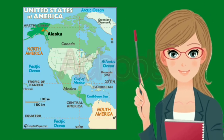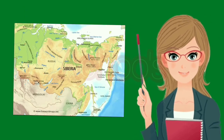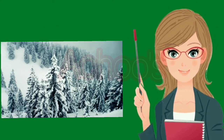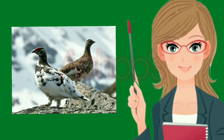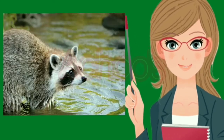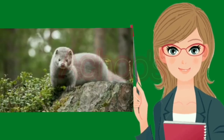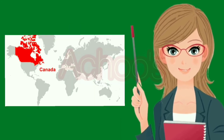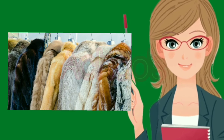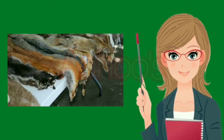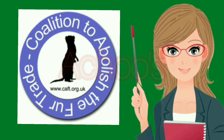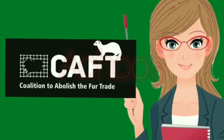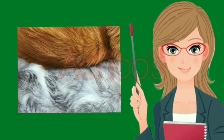Coniferous forests stretch around the earth from western Alaska to eastern Siberia. Wildlife is not abundant in taiga forests due to harsh cold winters and limited food sources — bears hibernate and birds migrate to warmer places during winter months. Animals like squirrels, hares, raccoons, polar bears, silver foxes, and minks are found here. Fur farming is very common in countries like Canada. However, many people are now aware of the cruelty involved in manufacturing fur garments. One such initiative is CAFT — the Coalition to Abolish the Fur Trade — which aims to ban fur farming and close down this industry to save animal lives.